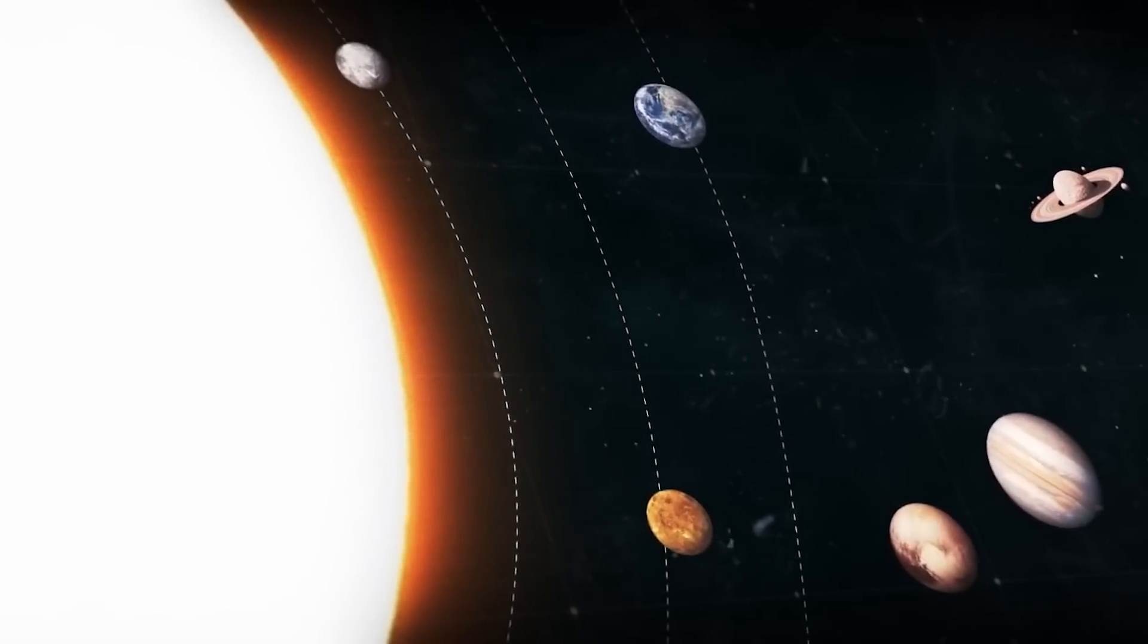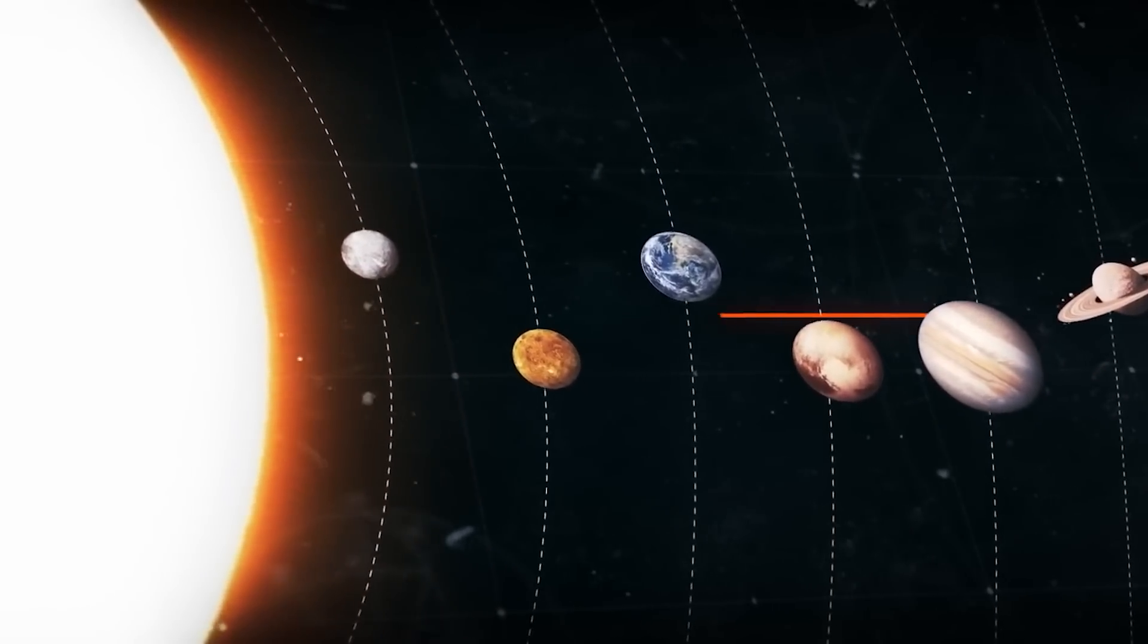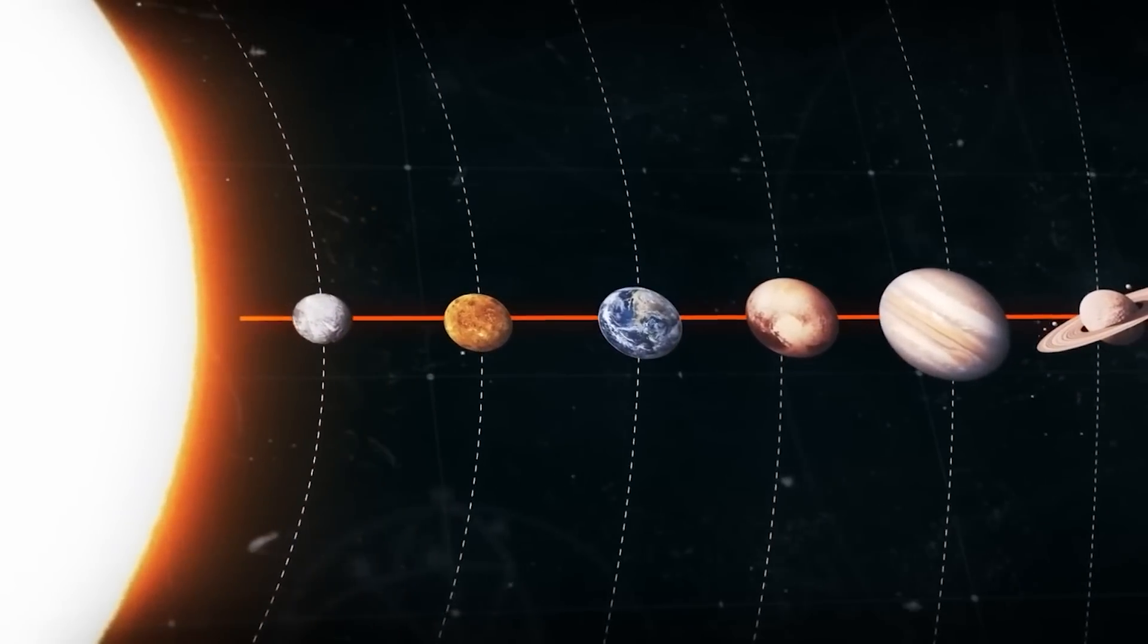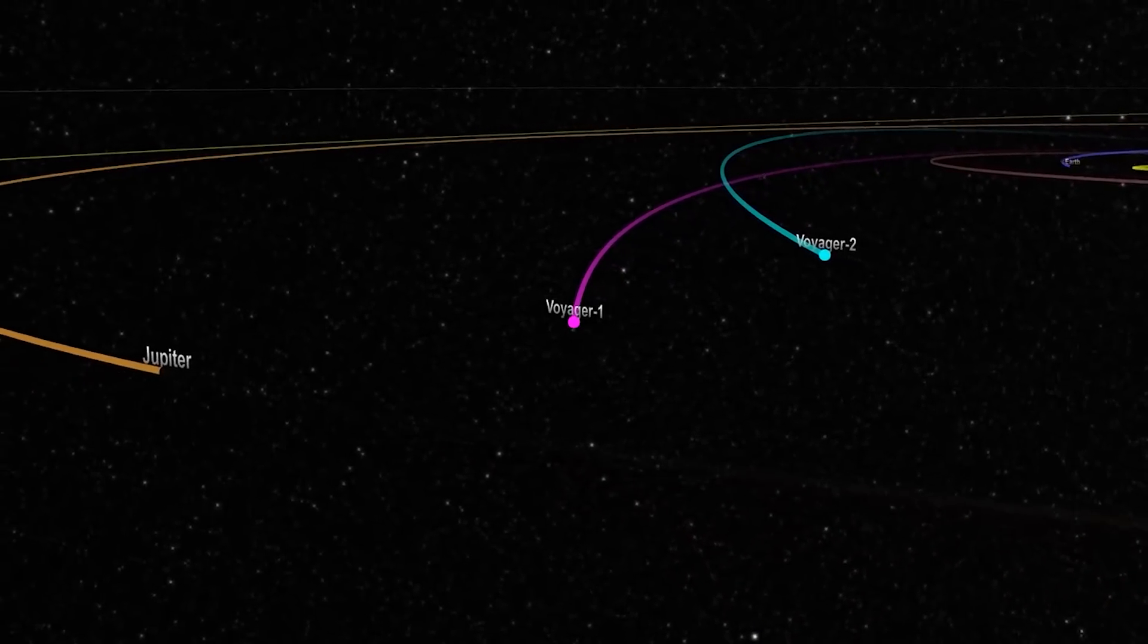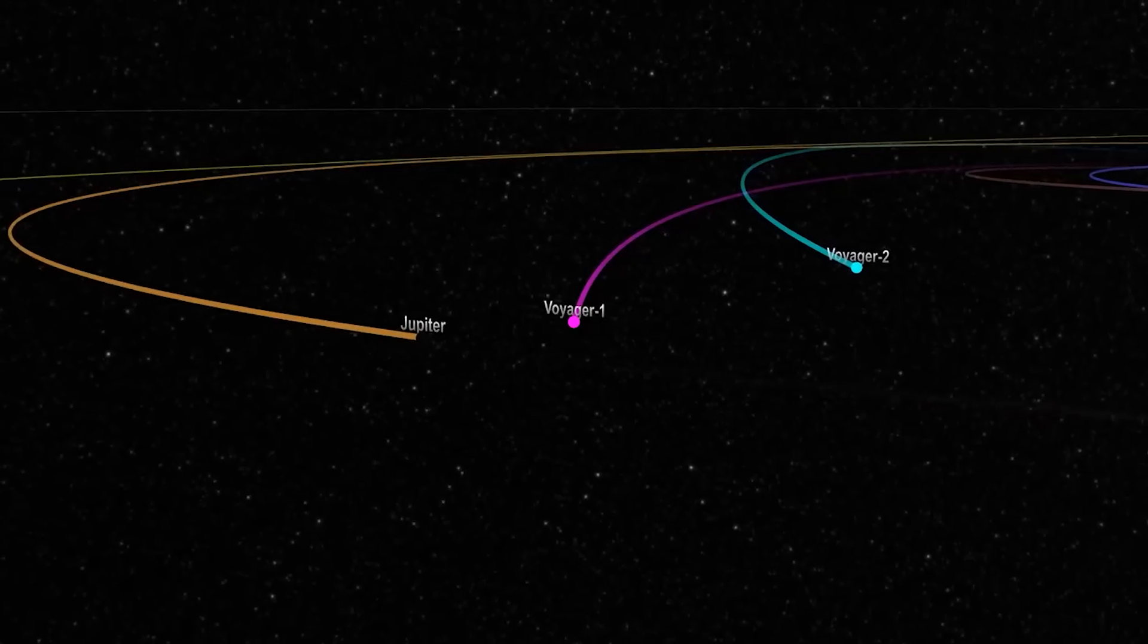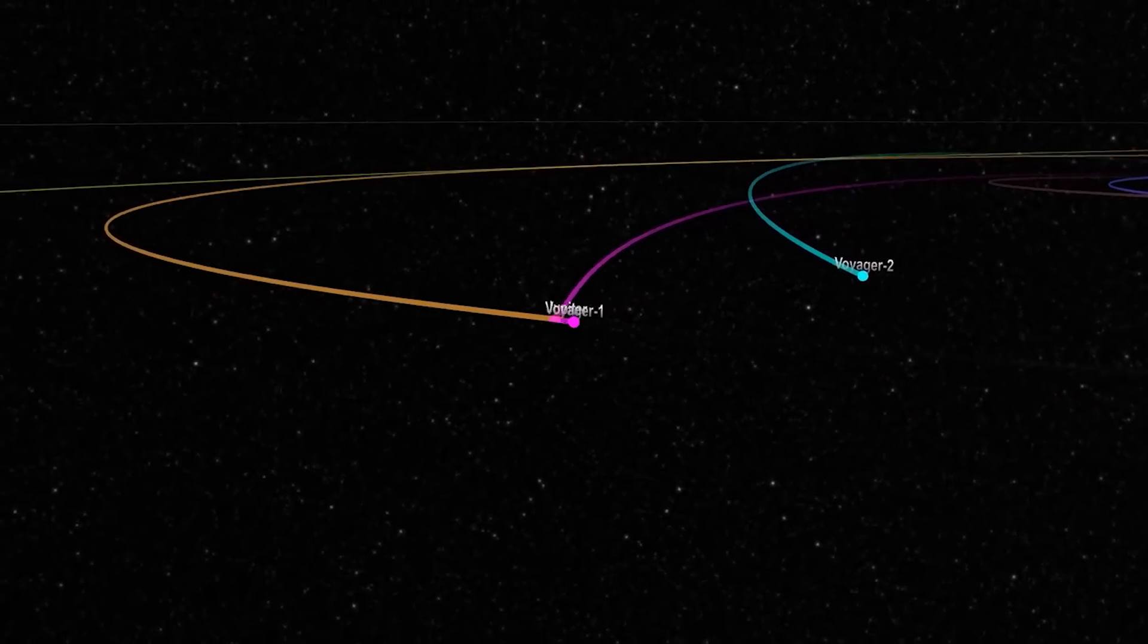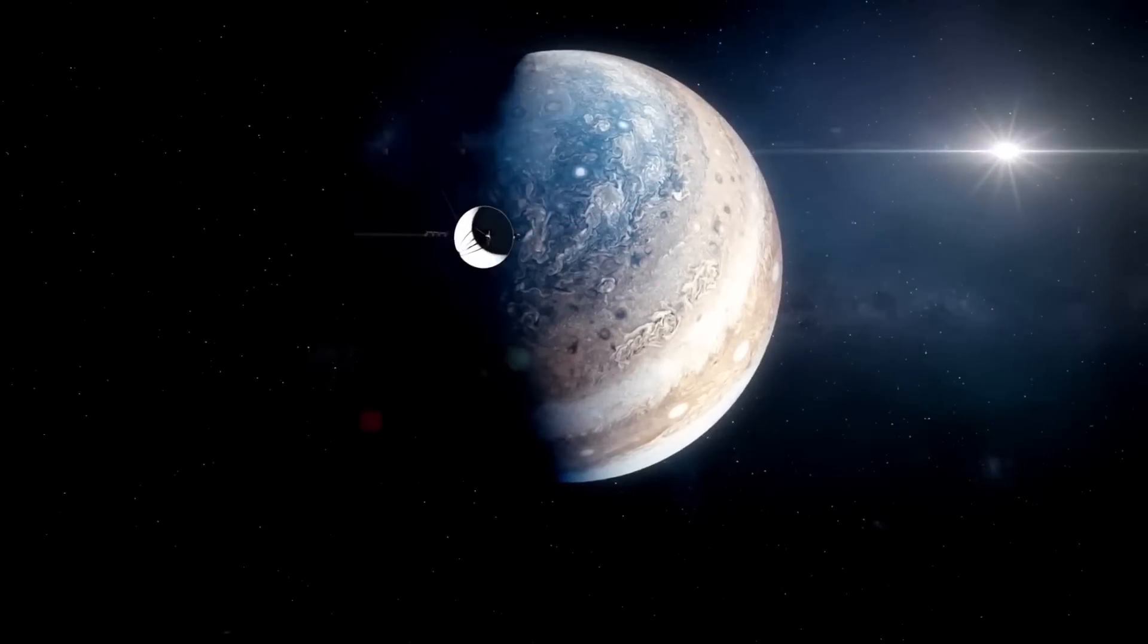But this would only happen when there is a rare geometric alignment to the outer planets, so rare that it only happens once every 200 years. So by using planetary gravitation and velocity, Voyager was projected to reach Jupiter in less than half the time, just 12 years.